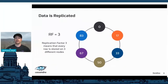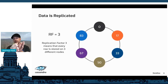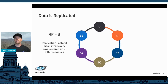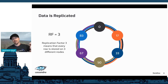Let me explain replication factor. Each node has a number — token values for illustration. Each node owns a range of tokens. With replication factor of one, each node owns one range. With replication factor of two, two nodes share a range. With replication factor of three — the default — three nodes hold a particular set of data. This is illustrated by the color-coded rings shifting on screen.